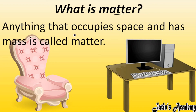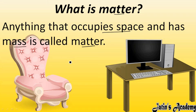What is matter? Anything that occupies space and has mass is called matter. Whatever things we see in our surroundings — like a table, chair, laptop, or computer — all these things are occupying some space and have some mass. So materials that occupy space and have mass are known as matter.